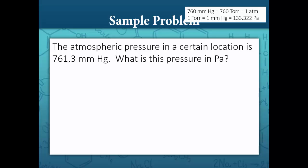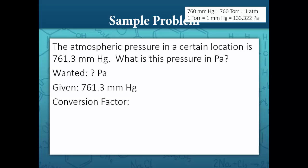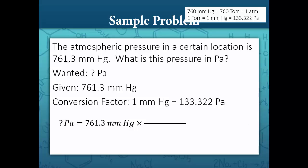Another problem. The atmospheric pressure in a certain location is 761.3 millimeters mercury. What is this pressure in pascals? Our conversion factor is 1 millimeter mercury equals 133.322 pascals. Setting up our problem: question mark pascals equals 761.3 millimeters mercury. We put 1 millimeter mercury in the denominator and 133.322 pascals in the numerator. Multiplying the numerators and dividing by the denominator, we get 1.015 times 10 to the fifth pascals.